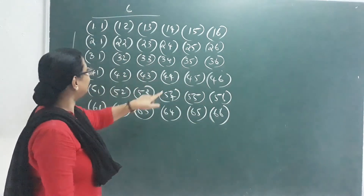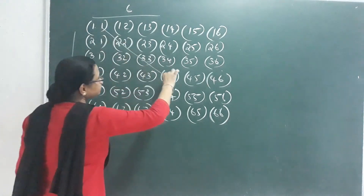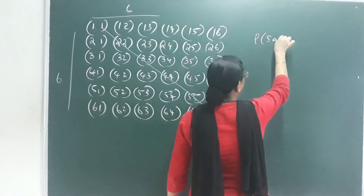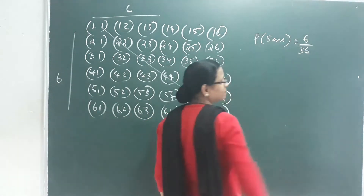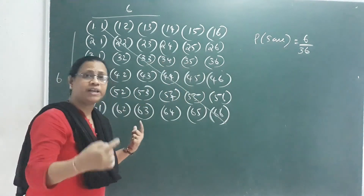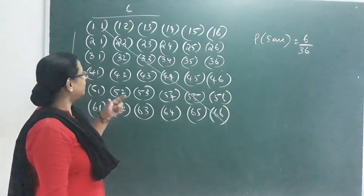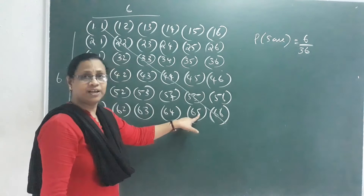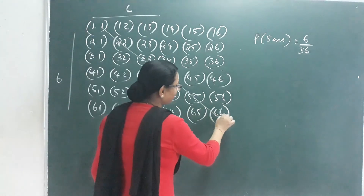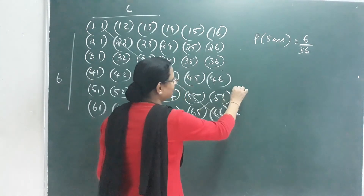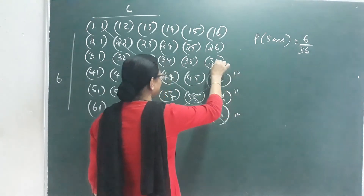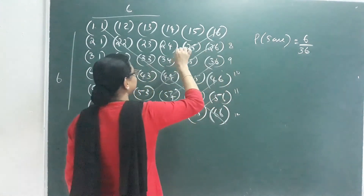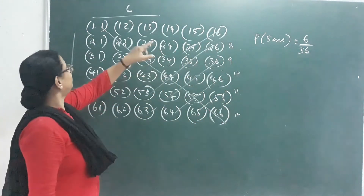Looking at the sums from the outcome table: possible sums range from 2 to 12. The sum of 12 occurs once, sum of 11 twice, sum of 10 three times, sum of 9 four times, sum of 8 five times, sum of 7 six times, sum of 2 once.